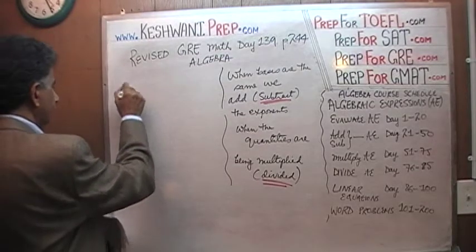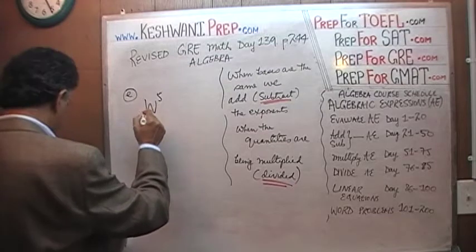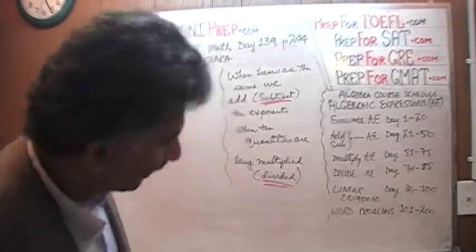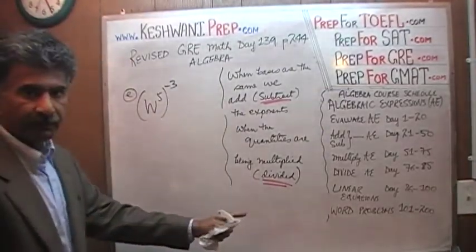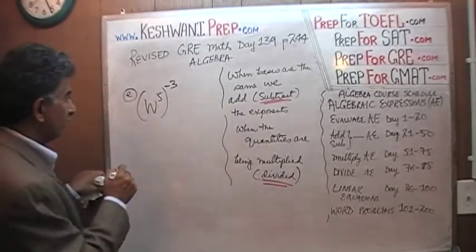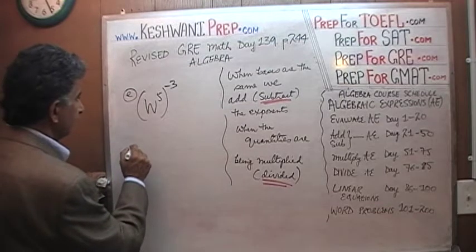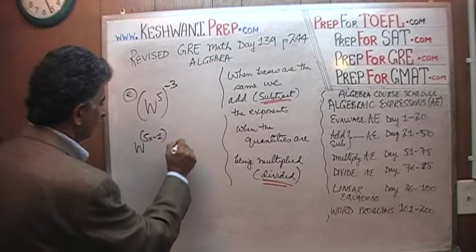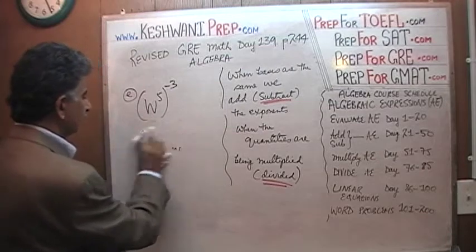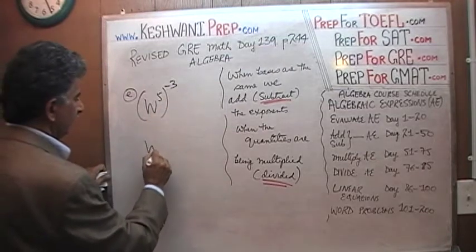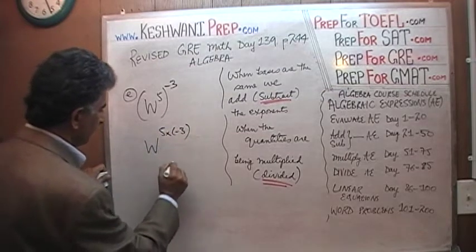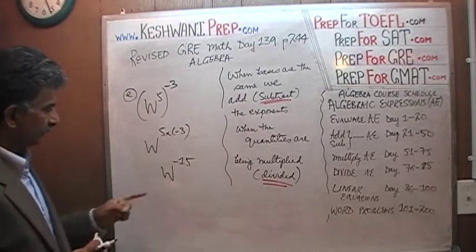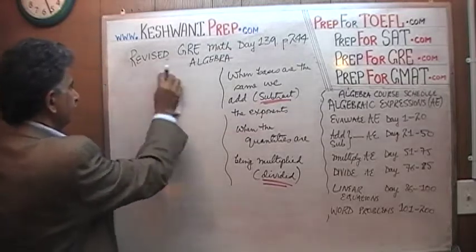Part E says W raised to 5, the whole thing raised to negative 3. Now here it gets tricky. What is going on is you multiply the exponents: 5 times negative 3. So this becomes W raised to 5 times negative 3, which is W raised to negative 15. That's the answer — W raised to negative 15.